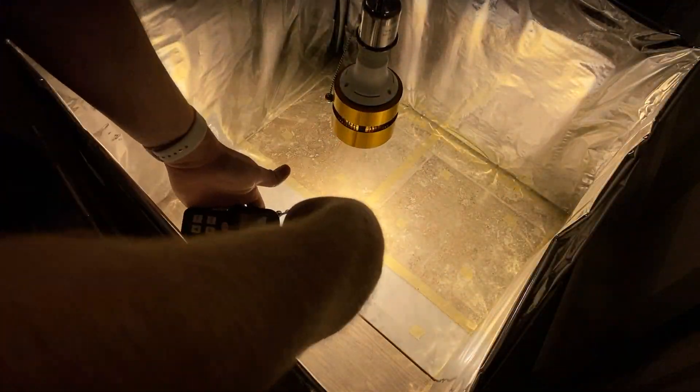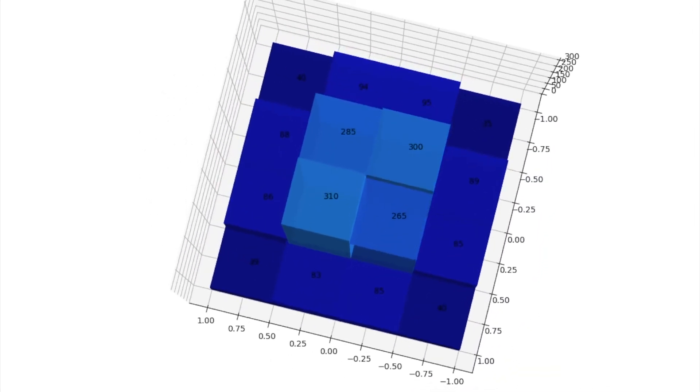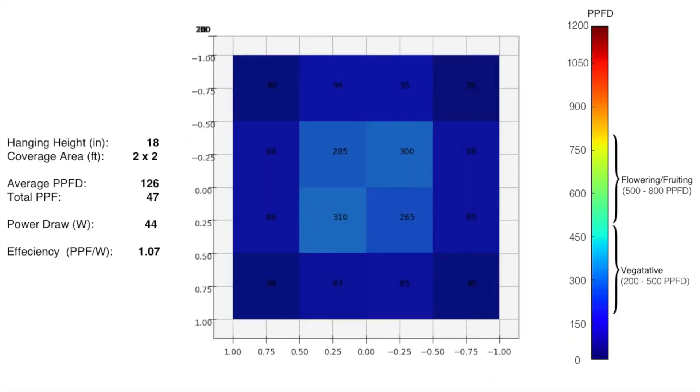So testing the PPF, I took 16 readings in a 4x4 grid. And these are the PPF values that I've got. My hanging height was 18 inches. For a coverage area of 2 foot by 2 foot, it gives me an average PPFD of 126 and a total PPF of 47.